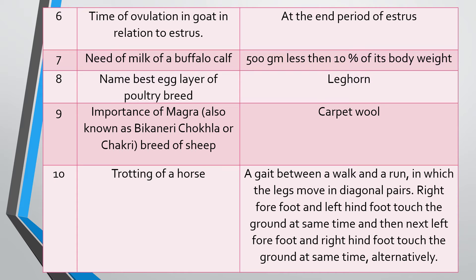Question ten: What is trotting of a horse? Answer: It is a gait between a walk and a run in which the legs move in diagonal pairs. The right forefoot and left hind foot touch the ground at the same time, and then the left forefoot and right hind foot touch the ground at the same time. Both diagonal pairs alternate, not simultaneously. This is how the horse moves continuously — it is a gait between walk and run.